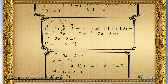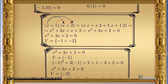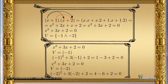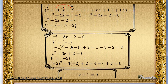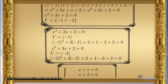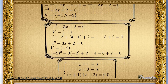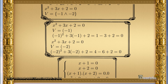The truth set is minus 1 and minus 2. Replacing minus 1, we get 1 minus 3 plus 2, which gives 0 — confirming it is a root. Doing the same with minus 2 gives 4 minus 6 plus 2, again equal to 0.